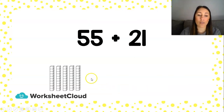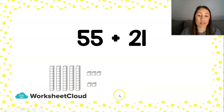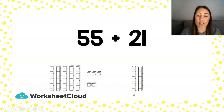Now if we draw it with our blocks, we have 5 groups of 10 — counting in 10s: 10, 20, 30, 40, 50 — and we have 5 units. We have 2 groups of 10, counting in 10s: 10, 20, and we have 1 unit.